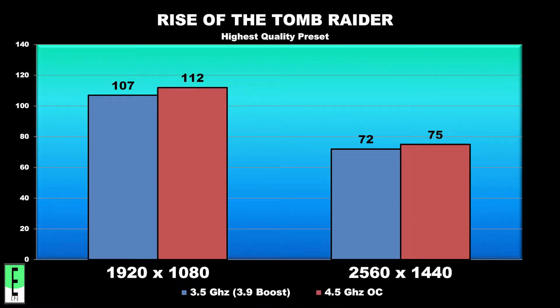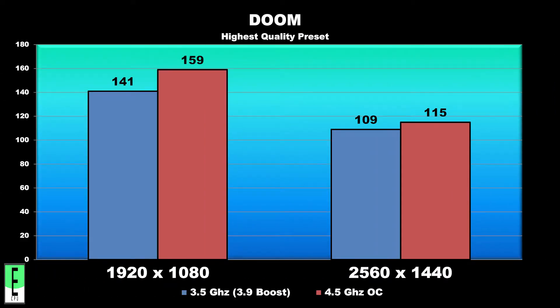Moving along to our results, we'll kick things off with Rise of the Tomb Raider, where we saw an increase in frame rate at 1920x1080 of about 5%, and about 4% at 2560x1440 with our CPU overclocked to 4.5 GHz. Next up is Doom at 1920x1080, where our 4.5 GHz overclock got us about a 13% increase in frame rate, which is quite significant.